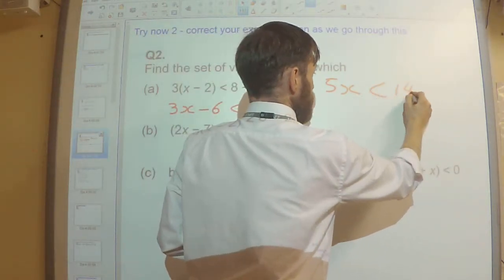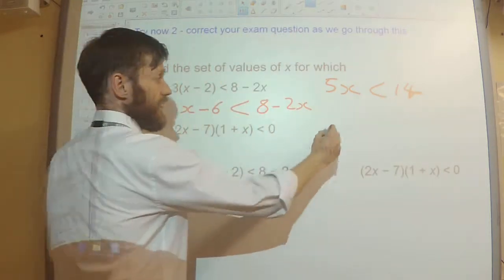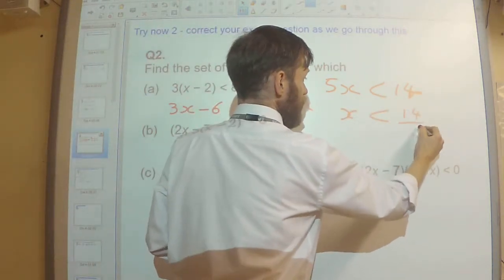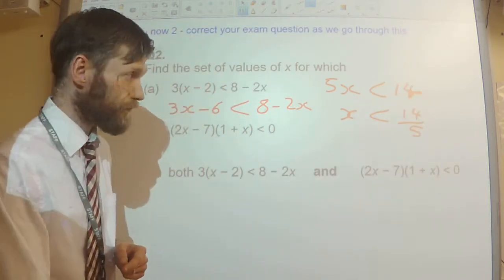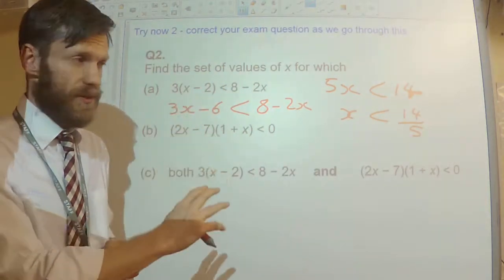So 5x has got to be less than 14, so x has got to be less than 14 over 5, which is 2.8.